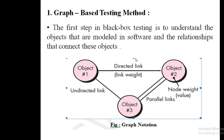In black box testing, relationships are shown with the help of links. There are three different types of links between objects: directed links, undirected links, and parallel links. A directed link means object one has a direct link to object two — that is, a one-way relationship from object one to object two, not the reverse.